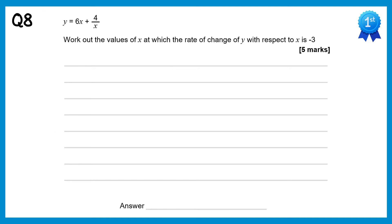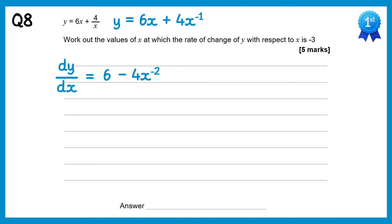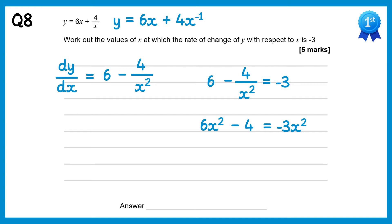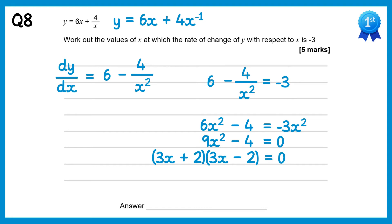For this question, rewrite 4 over x as 4x to the power negative 1. Then dy/dx: 6x differentiates to give 6, and 4x to the power negative 1 gives negative 4x to the negative 2, written as negative 4 over x squared. Setting equal to negative 3, multiply both sides by x squared: 6x squared minus 4 equals negative 3x squared. Adding 3x squared gives 9x squared minus 4 equals 0. Recognising this as difference of two squares, factorise to 3x plus 2 and 3x minus 2 equals 0, giving x equals negative 2 thirds and x equals positive 2 thirds.